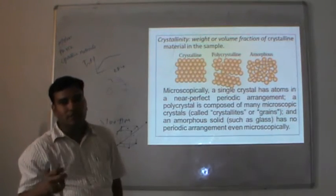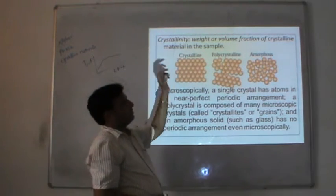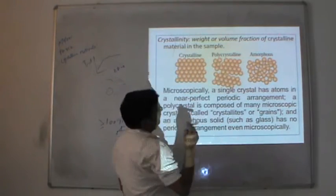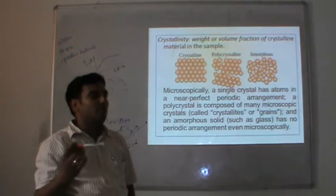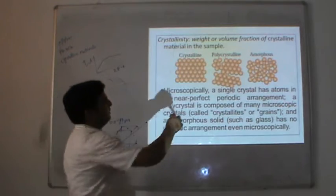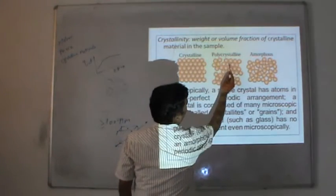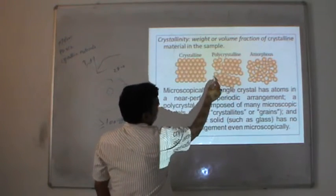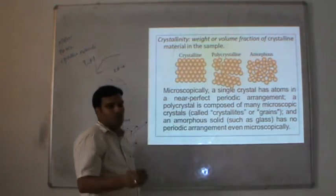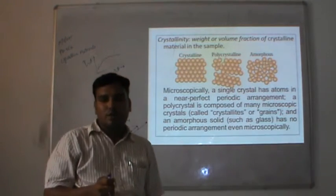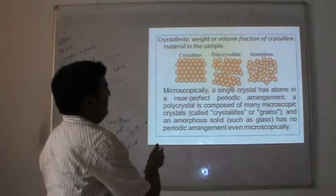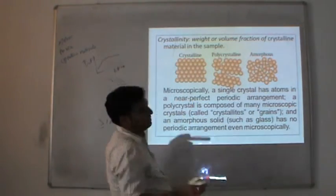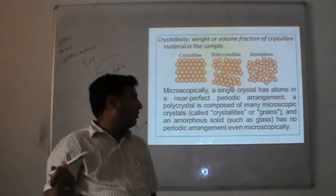In crystalline materials, we see the systematic arrangement of atoms. In polycrystalline materials, they have systematic arrangement but it is irregular — some regions are systematically aligned but others are not. These are known as polycrystalline materials. In amorphous materials, the alignment of atoms is irregular and the properties can be understood in terms of short-range order.